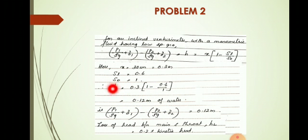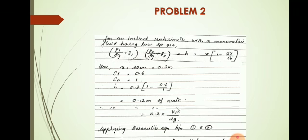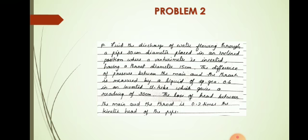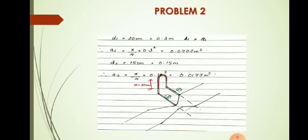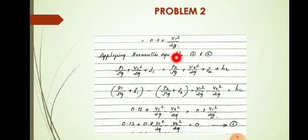This 0.12 meter is the difference in pressure head between point 1 and point 2, meaning p1 by rho g plus z1 minus p2 by rho g plus z2 equals 0.12 meter. The loss of head is 0.2 times the kinetic head of the pipe, so loss equals 0.2 times v1 squared by 2g, where v1 is the velocity at the pipe.